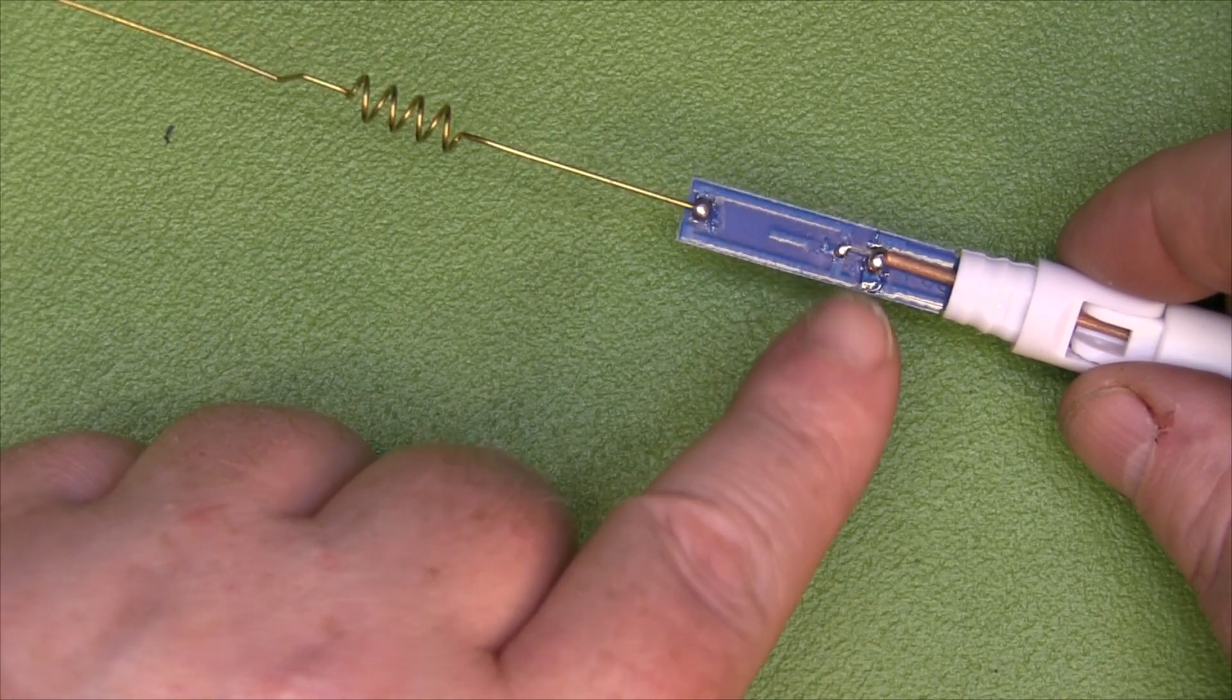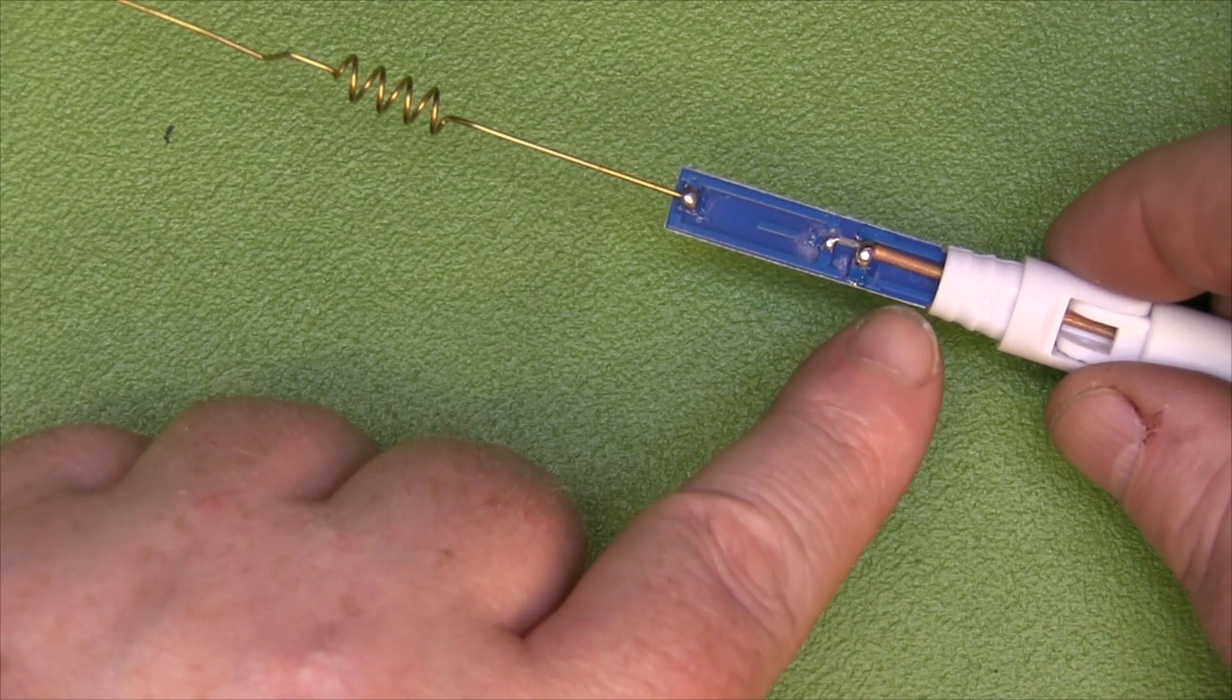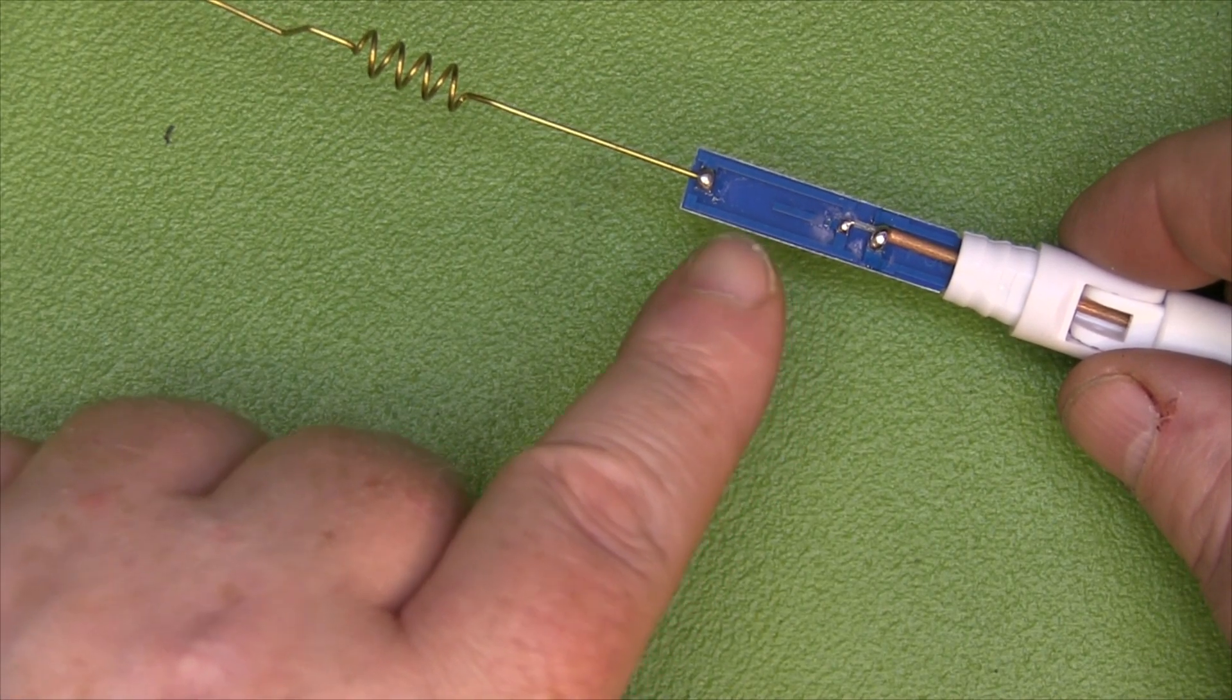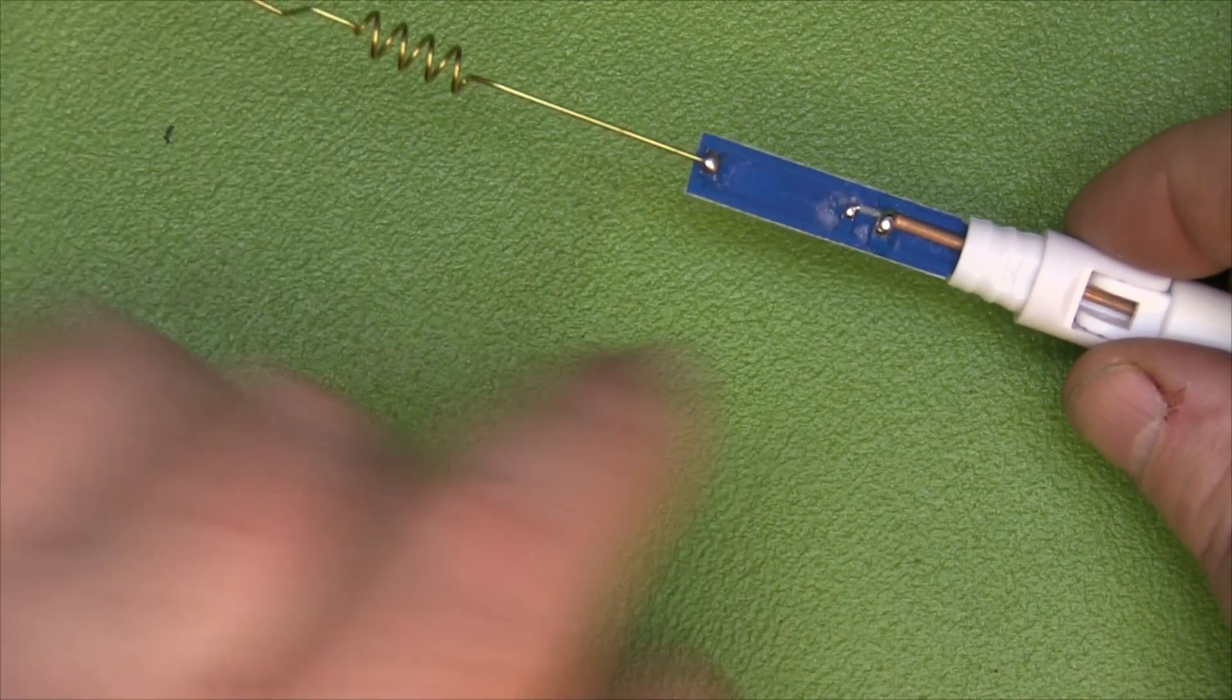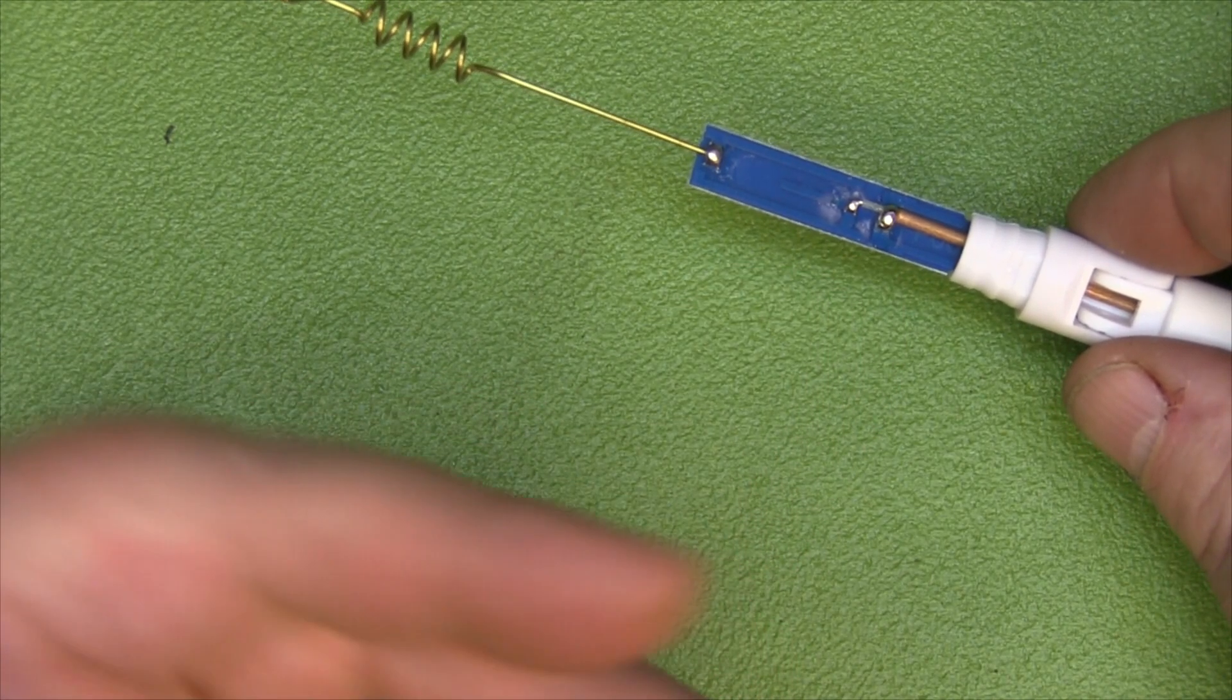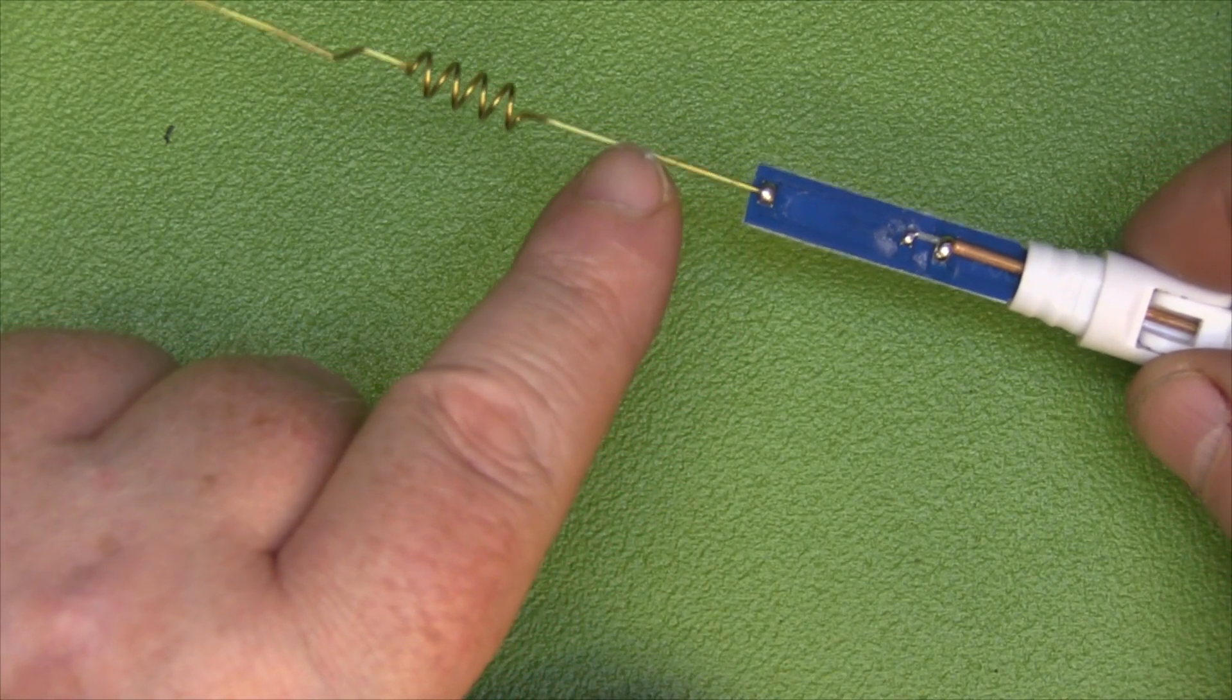So we've got the ground here and the first driven element here on the top. So if you desoldered this and removed this, it would still work around 2.4 gigahertz and would probably be about 2dB of gain. But then they've gone ahead and added this section here.